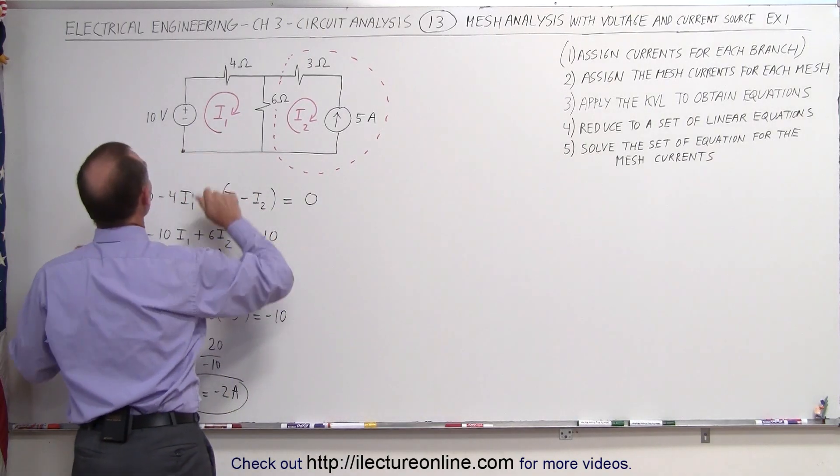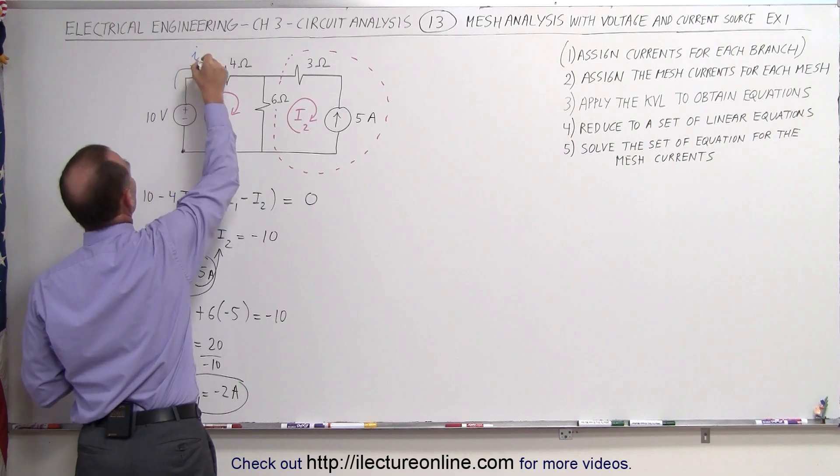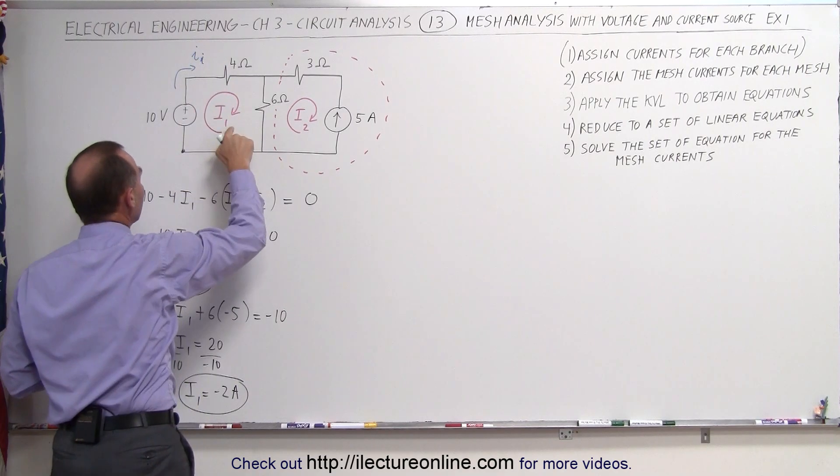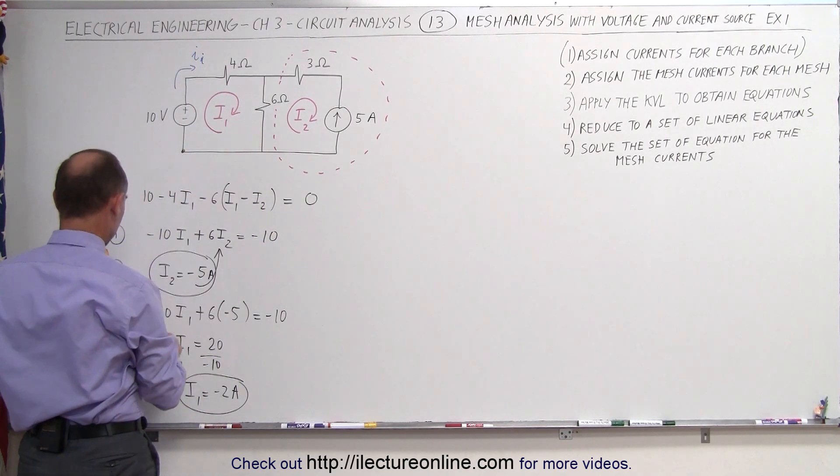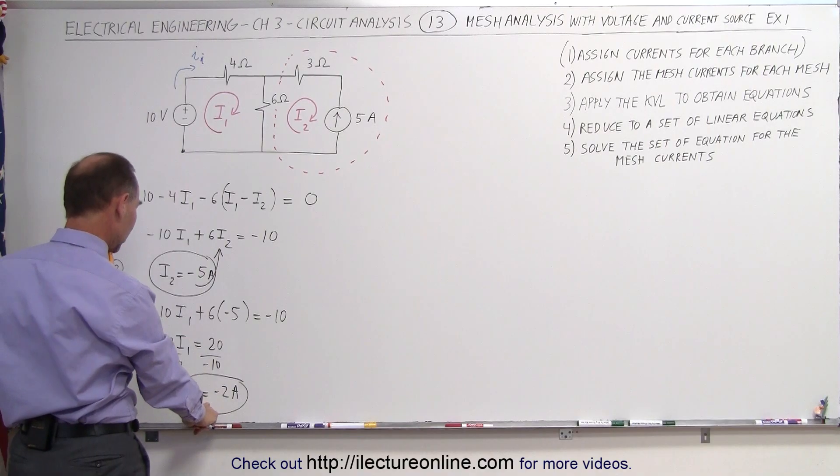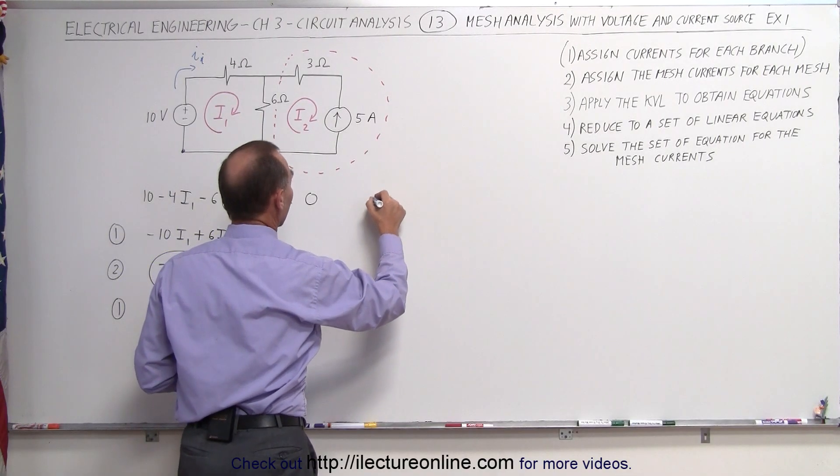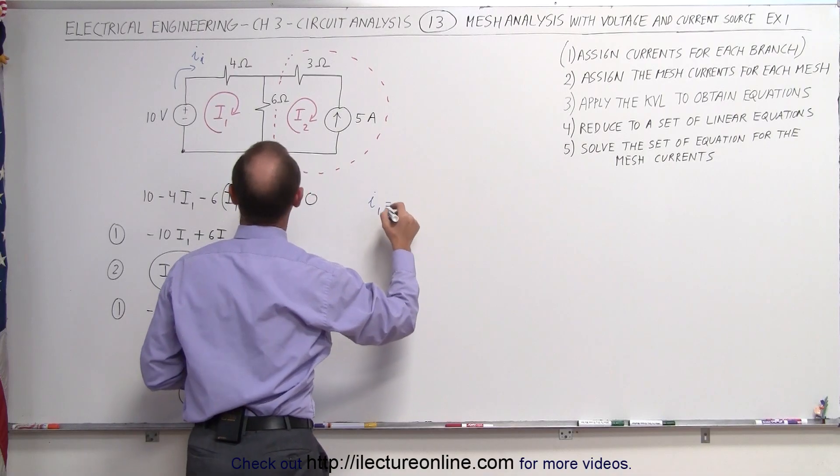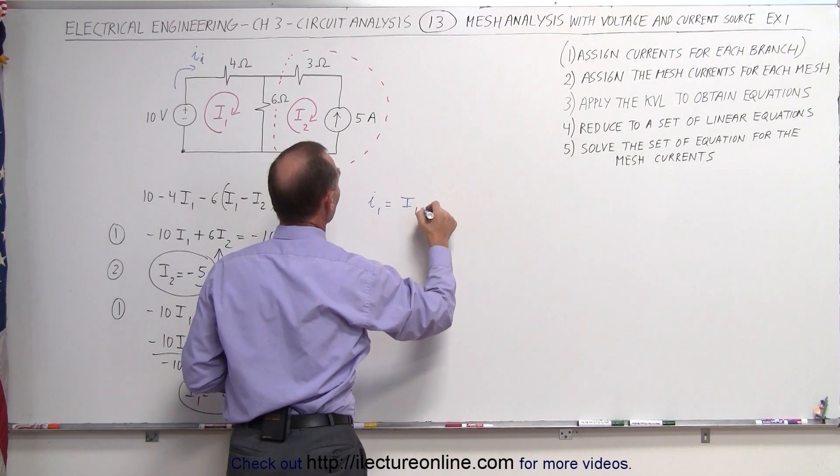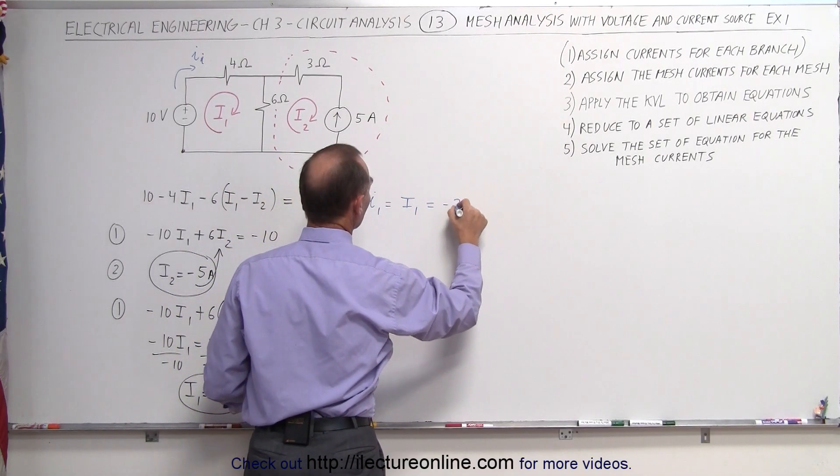If we call this branch 1, we can call this I1, and of course you can see that I1 is equal to the mesh current I1, which is minus 2 amps.